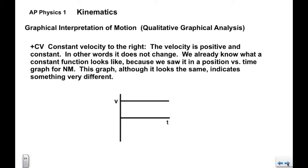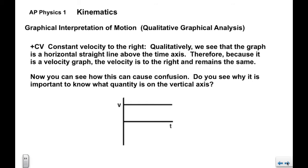For plus CV — constant velocity to the right — the velocity is positive and constant, meaning it doesn't change. The graph is a horizontal straight line above the time axis. Although this looks similar to the position versus time graph for no motion, it indicates constant velocity, not constant position. This is why it's very important to realize what is being graphed — this is a velocity graph, not a position graph, so it gives us different information.